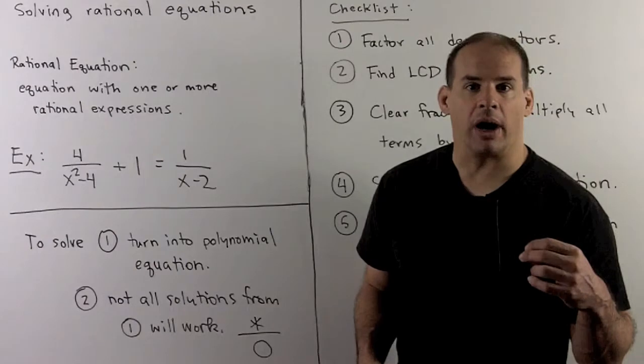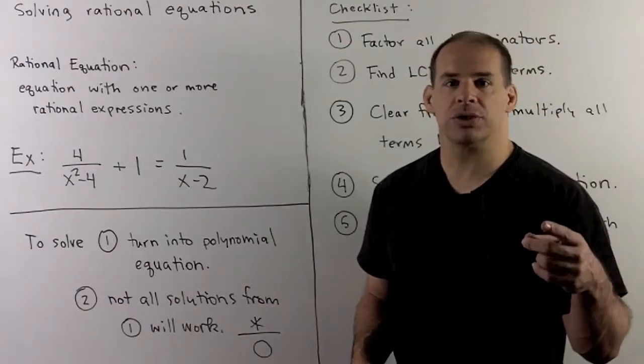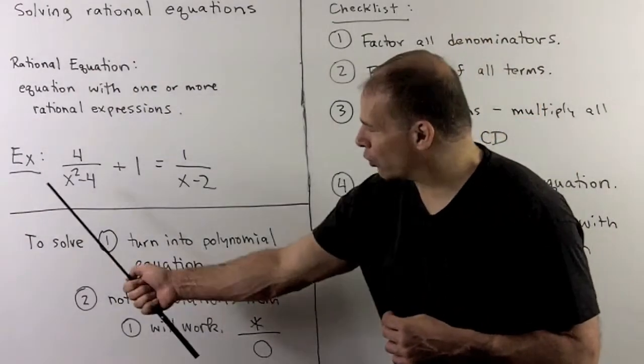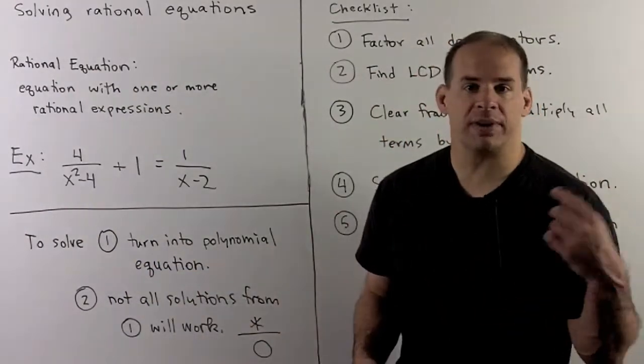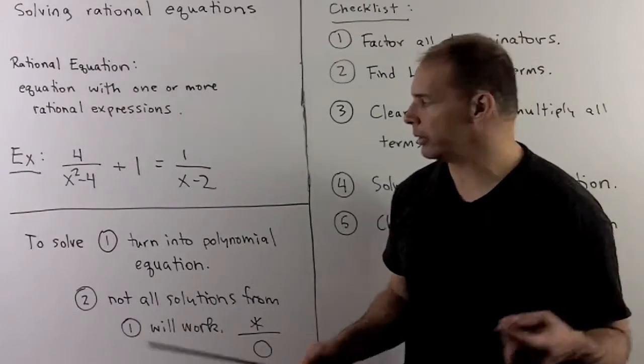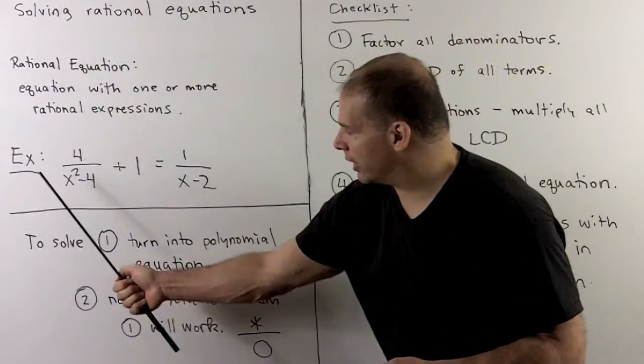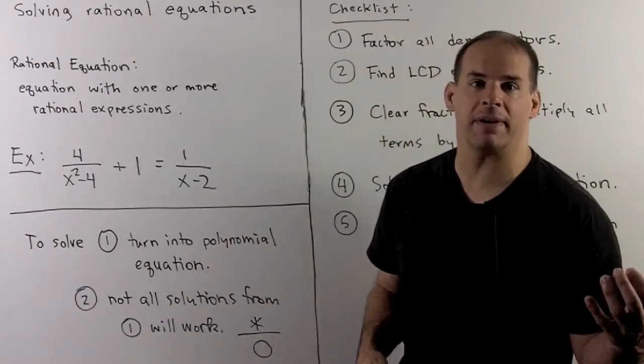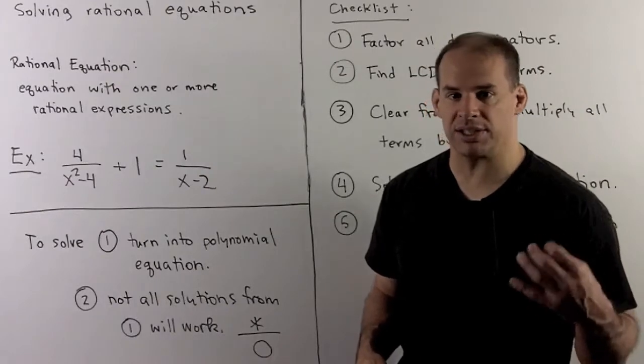Another thing we have to worry about: when we find solutions through a polynomial equation, they might not work in the original equation. So if I solve and x equals 2 from the polynomial equation, that's not going to work in the original equation here because I'll wind up dividing by zero. Dividing by zero gives me undefined, so our equation won't make any sense.